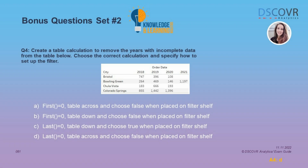Question number 4 is a little bit more tricky. Here you need to create a table calculation to remove the years with incomplete data from the table. We need to choose the correct calculation and specify how to set up the filter. You need to know what these two functions are used for and how table calculations work, or how changing the scope affects the values being computed. To help you answer this question, try to recreate this specific example using the sample Superstore dataset.